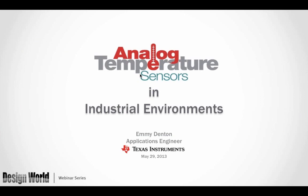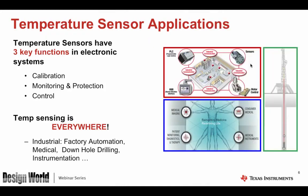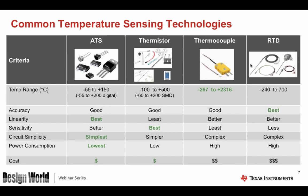Hi everyone, thanks for joining. I'm going to be presenting on temperature sensors — mainly different types and where they go in the industrial environment. Temperature sensors can be found in many places; our tagline is 'temperature sensing is everywhere.' They have three key functions: in-system calibration, monitoring and protection, and control. In the industrial environment you'll find them in factory automation, medical, downhole drilling, and instrumentation.